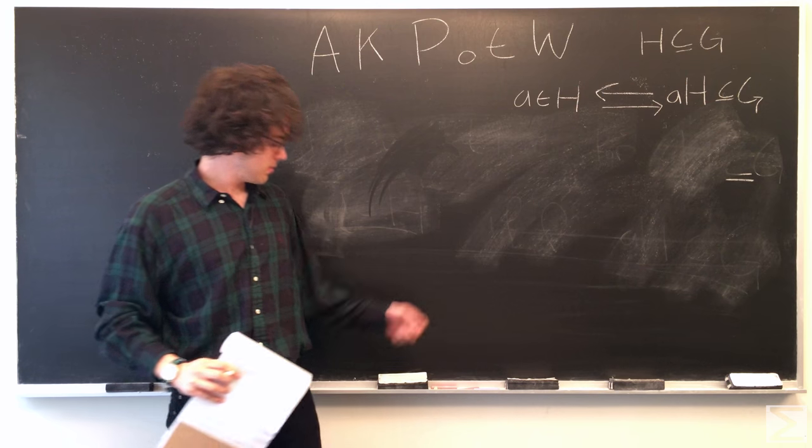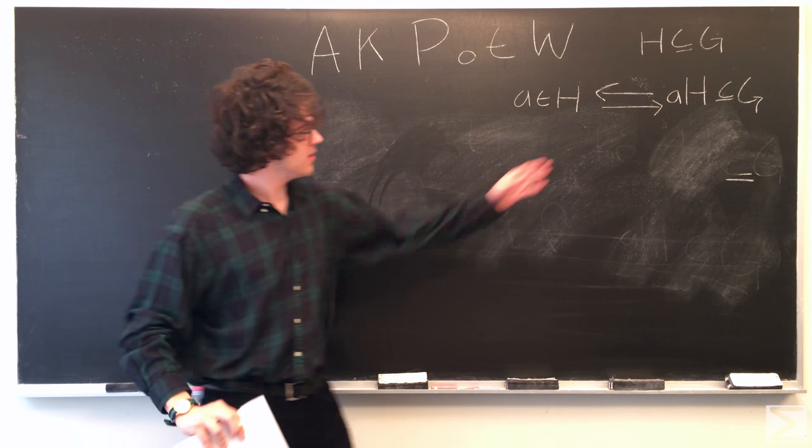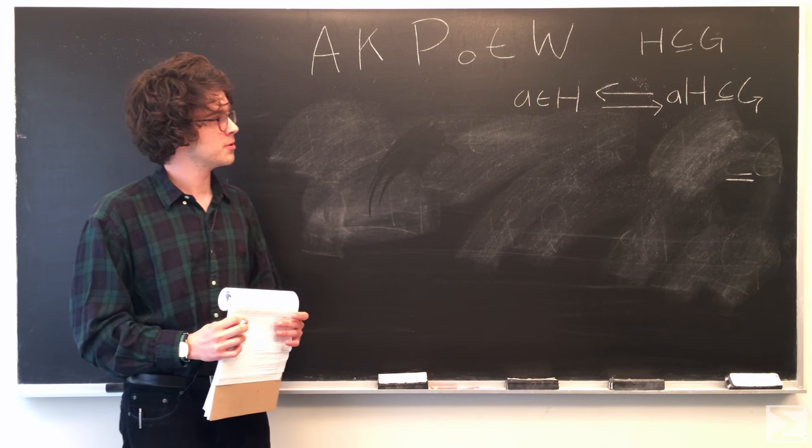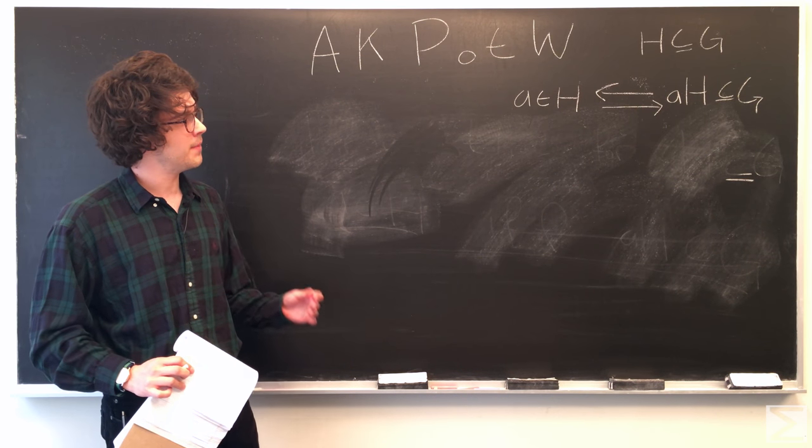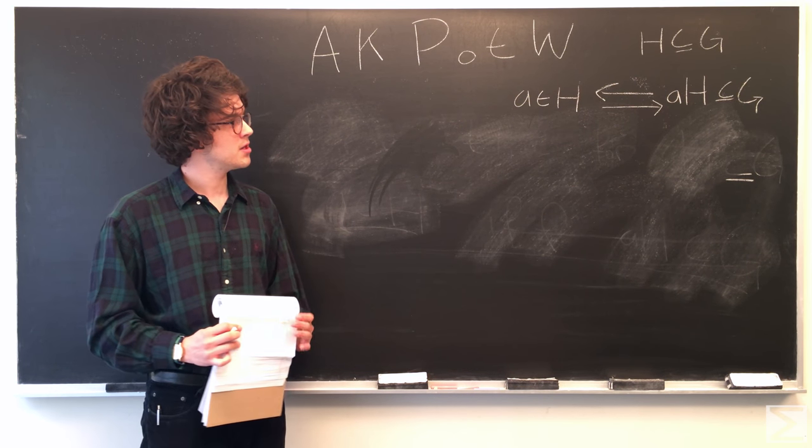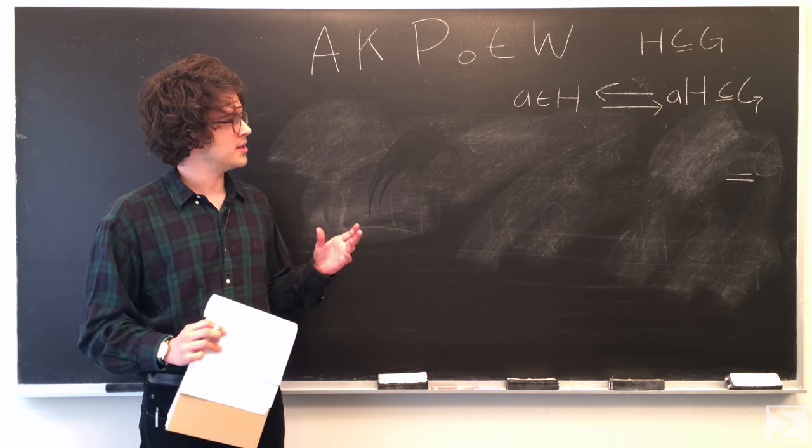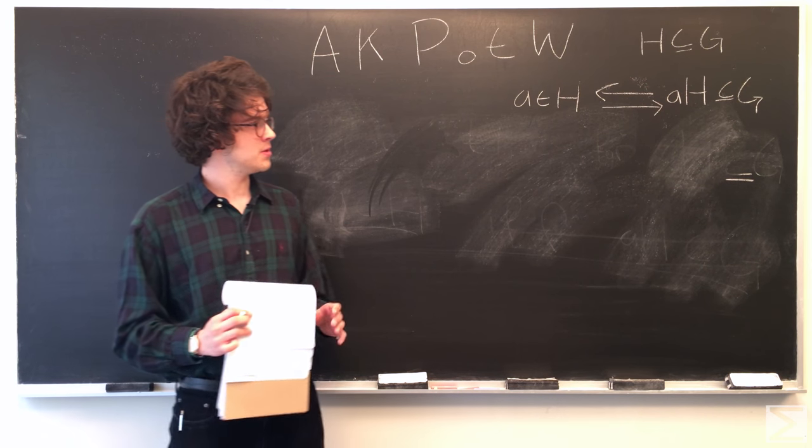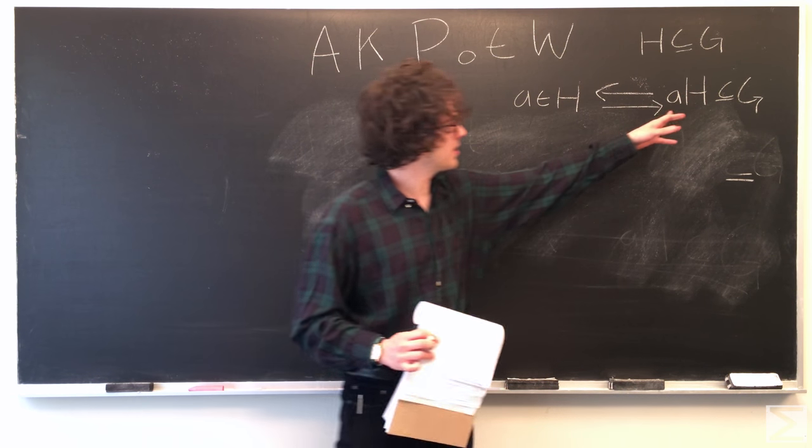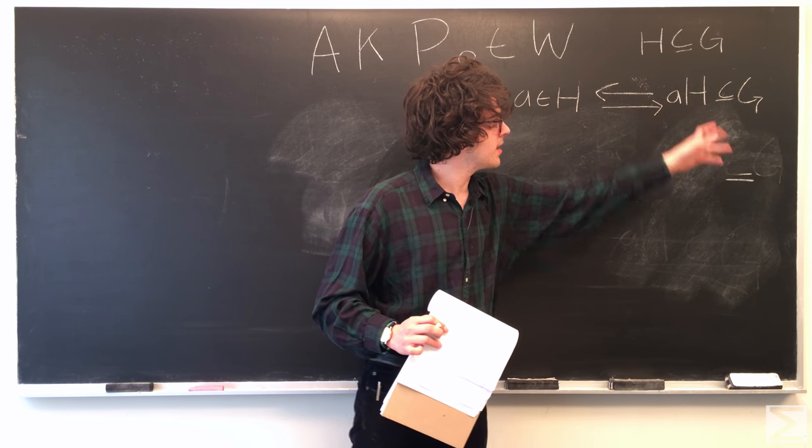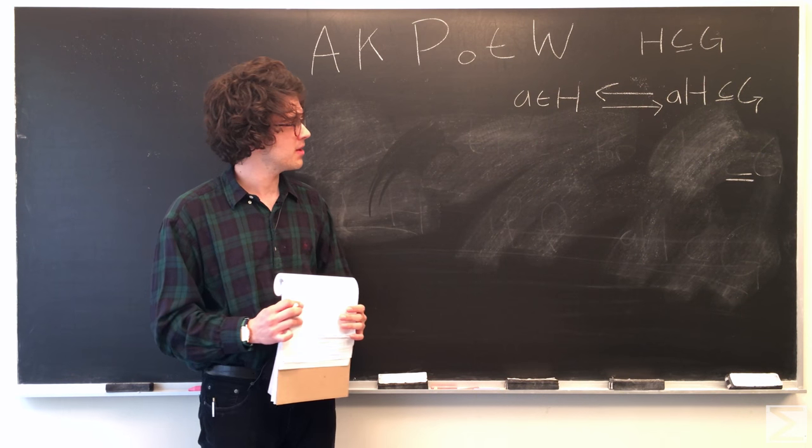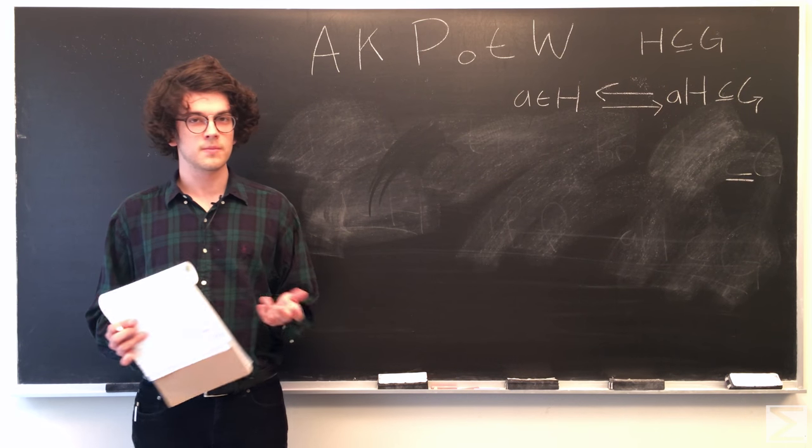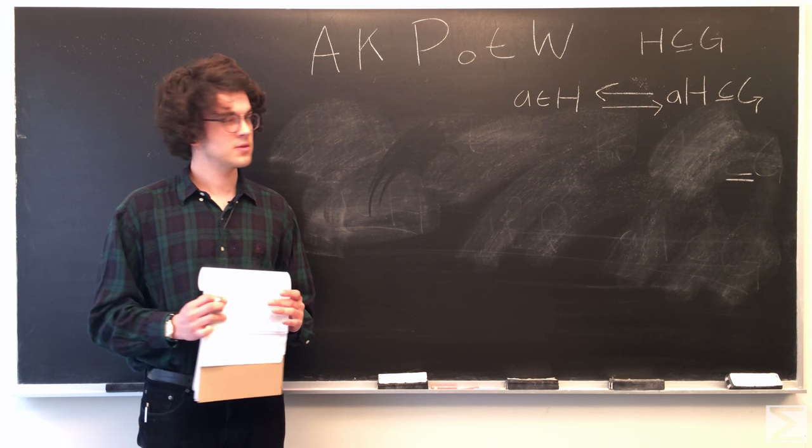So the only thing we know is that H is a subgroup of G, meaning that it has all the properties of a subgroup. So the identity is in H, H is closed under whatever operation we're using in our group. Because here we have A times H, so we're using multiplication. H is closed, and also the inverse is in H.